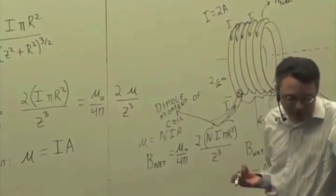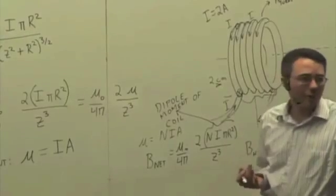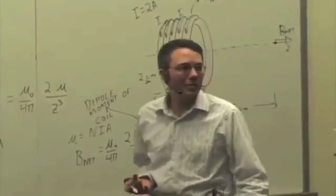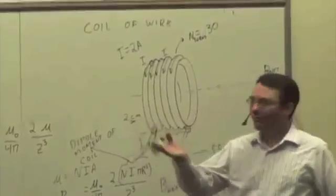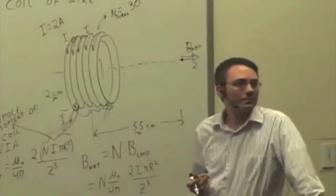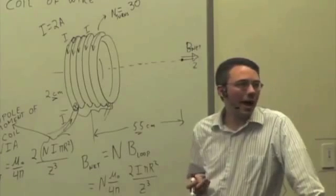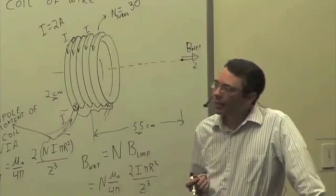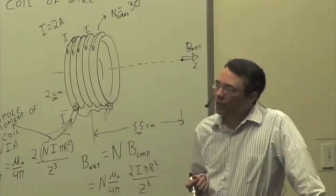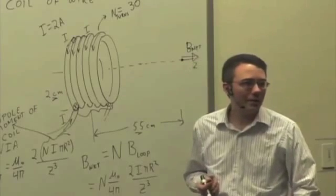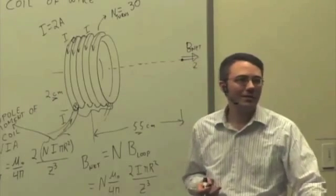The question is, why does a bar magnet make a magnetic field that looks like this? I mean, are there any moving charges here? Are there any currents here? It doesn't appear to be. It's not hooked up to a battery. So what could possibly be making this magnetic field? Any ideas?